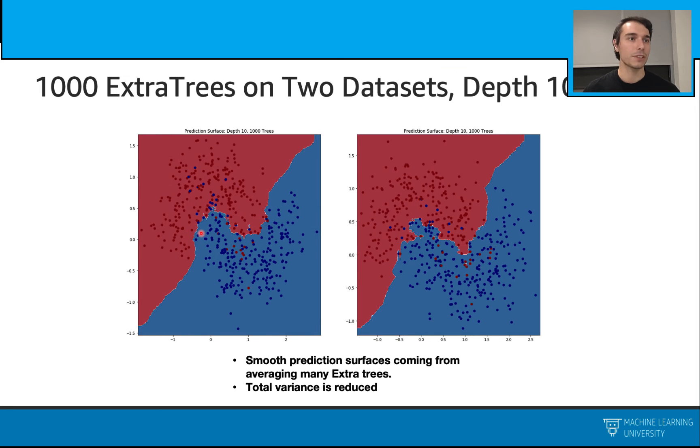Let's go one more step and use 1,000 ExtraTrees. This time we have a smooth prediction surface. As you see, this thing is really smooth, and this one also. This is coming from the averaging effect, and we also see that our total variance is reduced. And you can also see here that we are not trying to catch these outlier points anymore.